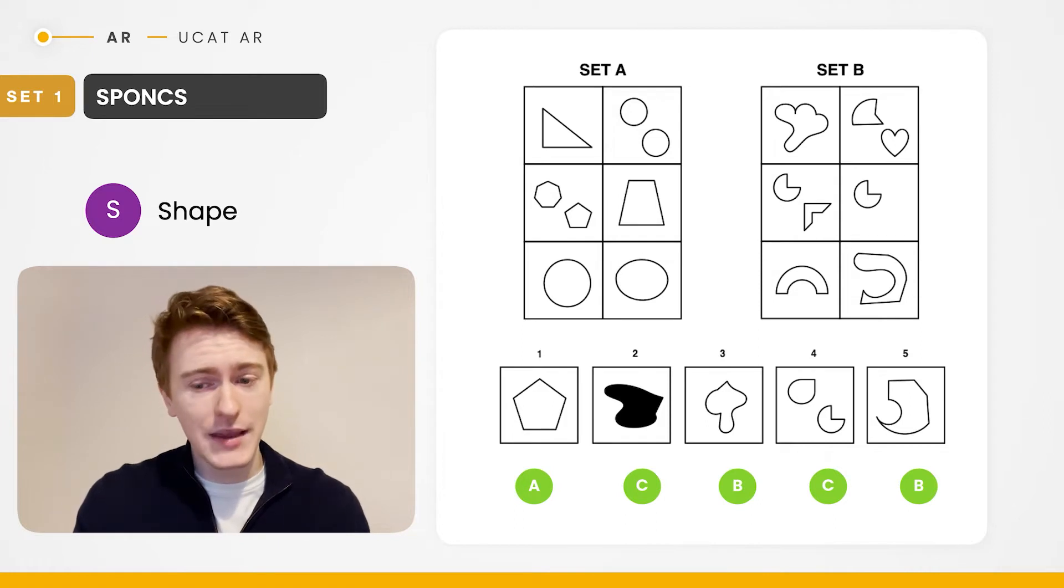Test shape number three belongs to set B. Test shape number four belongs to neither because there's that shape there, the top left shape, that actually doesn't have any sort of reflex angles going on. And the final one belongs to set B.